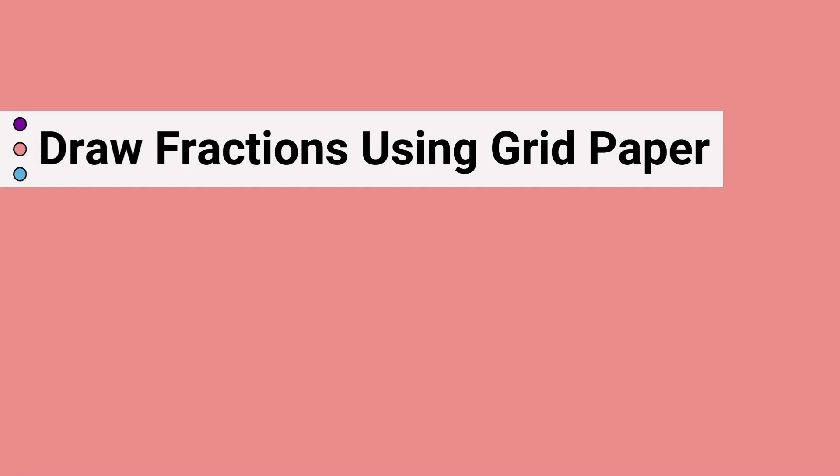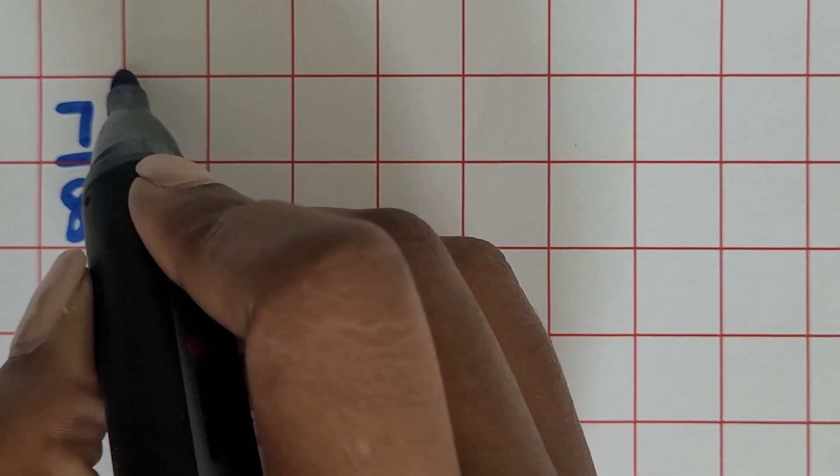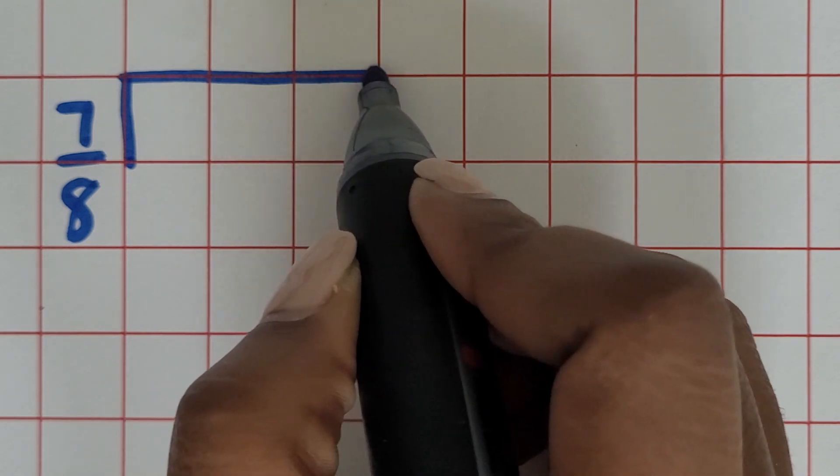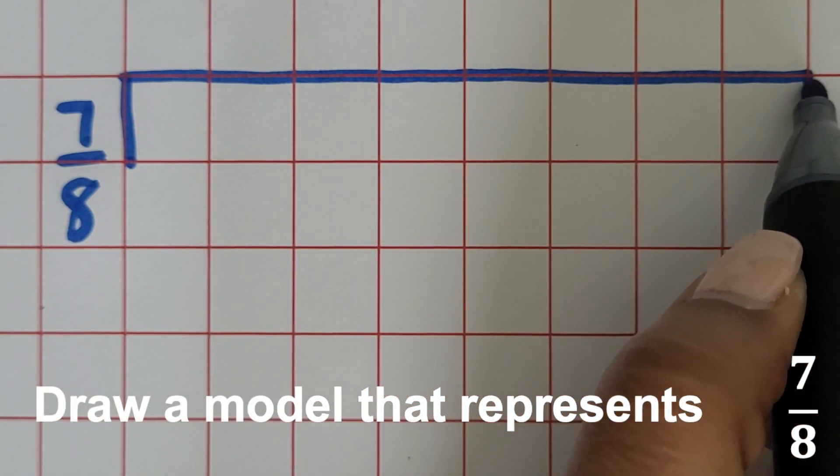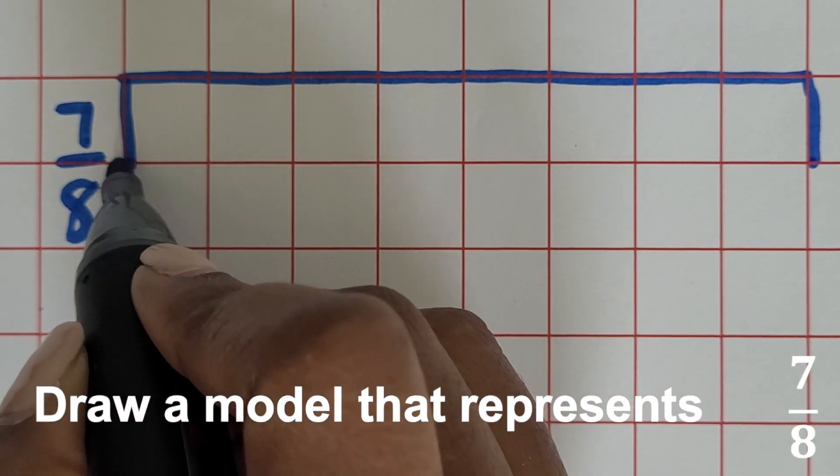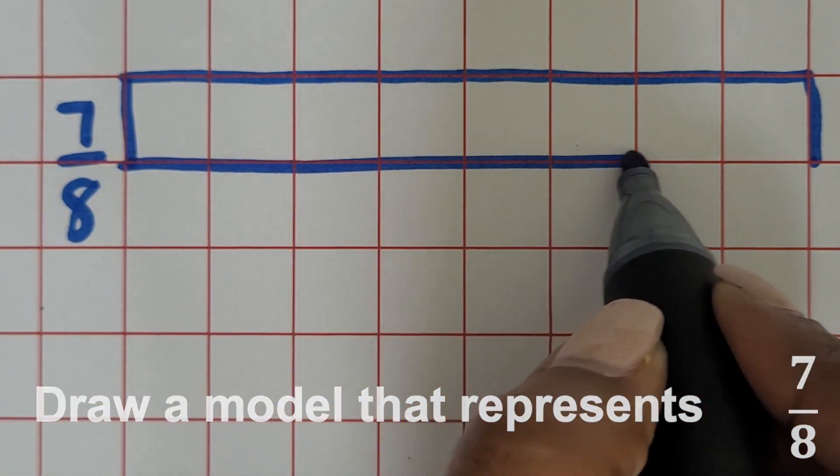Another option for drawing fractions is using grid paper if it's more difficult drawing freehand on a whiteboard or blank paper. We're going to use grid paper and draw the fraction seven-eighths.